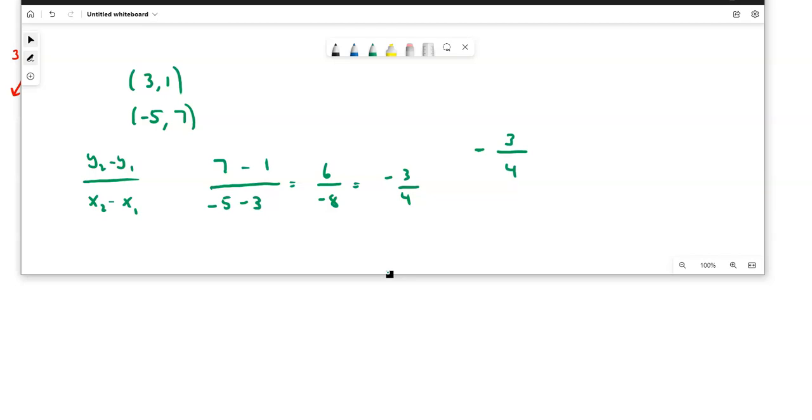The other thing is if you try doing it the other way, if you try doing the 1 minus 7 over 3 minus a -5, remember that there's two negatives in here. So 3 minus a -5 is the same as 3 plus 5. So you would get a -6 on the top, 8 on the bottom. That still simplifies to -3/4.